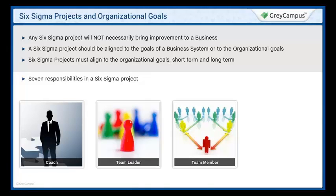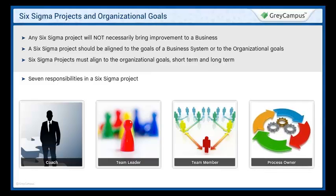6. Team member. An employee who works on a Six Sigma project is given specific duties within a project and deadlines to meet in reaching specific project goals. The team members execute specific Six Sigma assignments and work with other members of the team within a defined project schedule to reach specifically identified goals. 7. Process owner. The individual who takes on responsibility for a process after a Six Sigma team has completed its work.